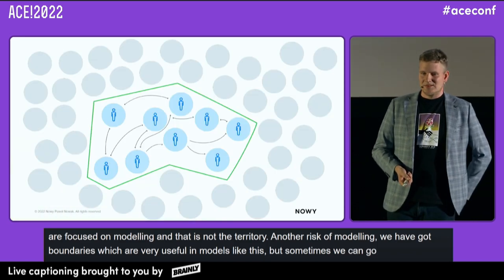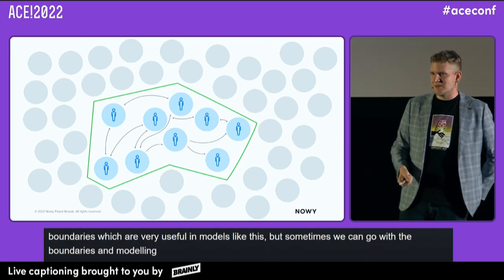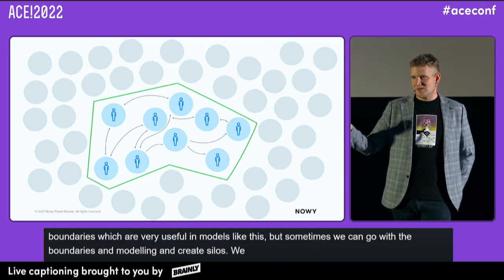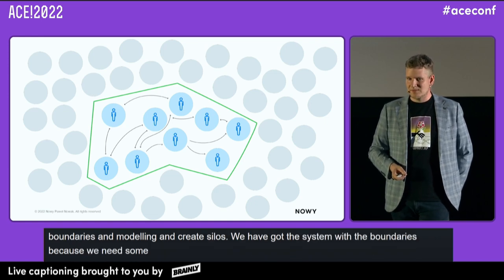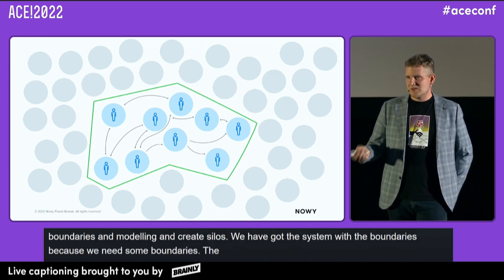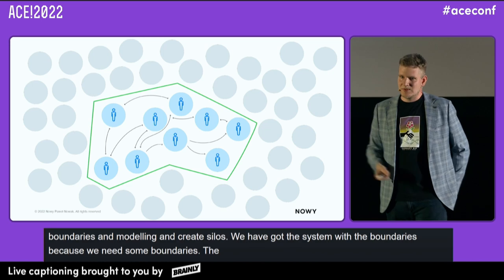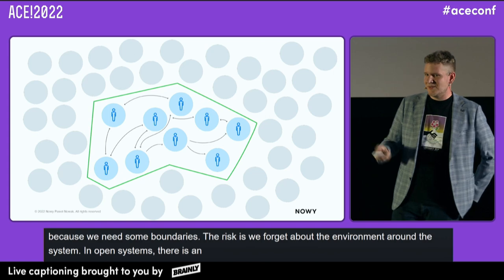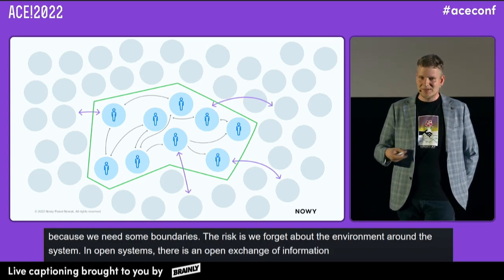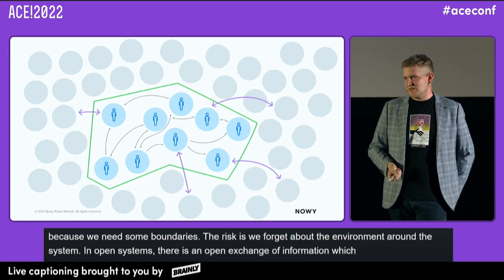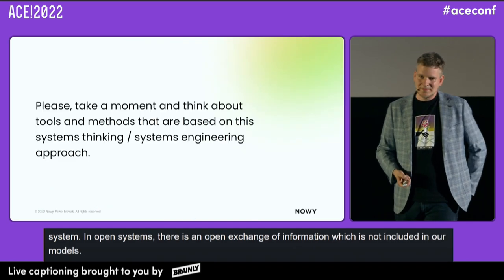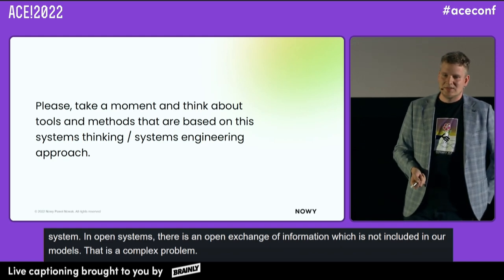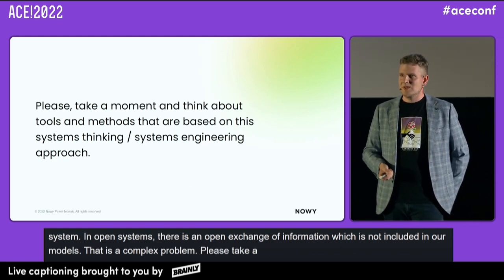We've got a system with boundaries because we need to put some boundaries when we're modeling. But the risk is that we forget about the environment around the system. In open systems, there is always an exchange of information and energy between stakeholders not included in our models. That's a complex problem. Please take a moment and think about methods and processes that use the systems thinking approach.